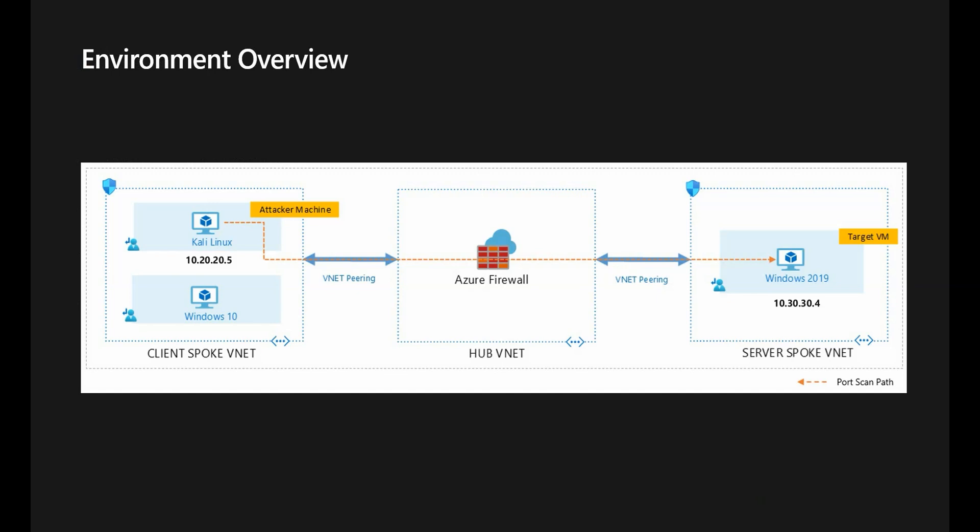An important thing to note here is that the client and the Server VNets cannot talk to each other directly — they do not have any direct connectivity between them. The way they get connectivity to each other is through VNet peering to the hub VNet, which is where Azure Firewall filters traffic between the two spokes.